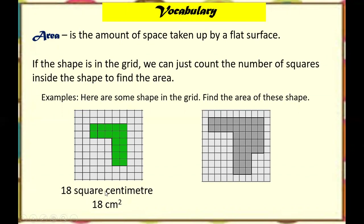That is why we say square centimeters, or centimeters squared, or meter squared, or inches squared, or yards squared — it depends on which metric unit we use. Just remember that area is the space taken up in a flat surface. For the gray shaded part, there are 42 squares, so the area is 42 cm². Now, what is the area of the rectangle shaded in green?